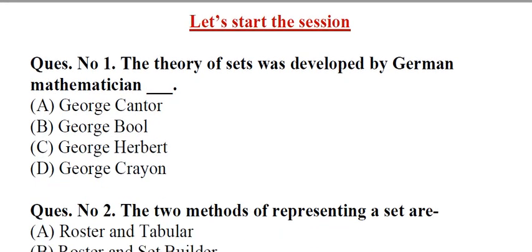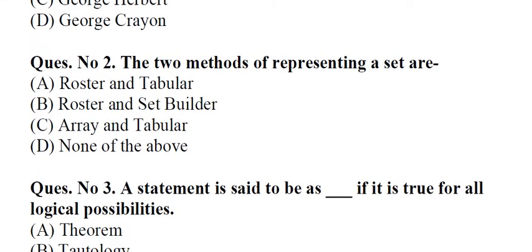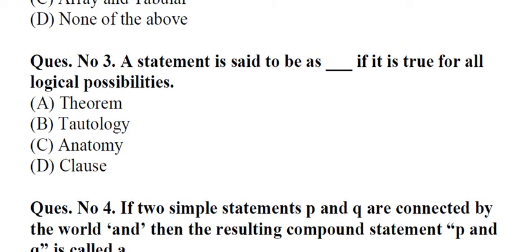Question number 1: The theory of sets was developed by German mathematician underscore. A. George Cantor, B. George Boole, C. George Herbert, D. George Crayon. Answer: A, George Cantor. Question number 2: The two methods of representing a set are A. Roster and tabular, B. Roster and set builder, C. Array and tabular, D. None of the above. Answer: B, Roster and set builder.